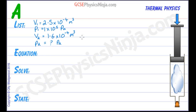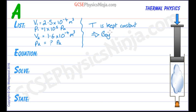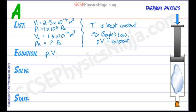The equation we're going to use: note that the temperature is kept constant. If that's the case, then we know this must be Boyle's law, which relates pressure and volume together at a constant temperature. So the equation is PV equals a constant, and we'll use the form P1V1 equals P2V2. Pressure times volume in the first situation equals pressure times volume in the second situation.